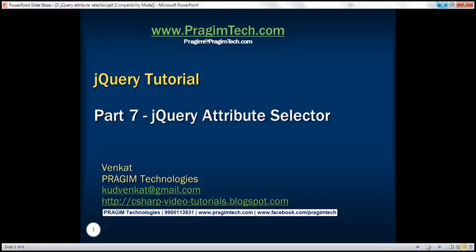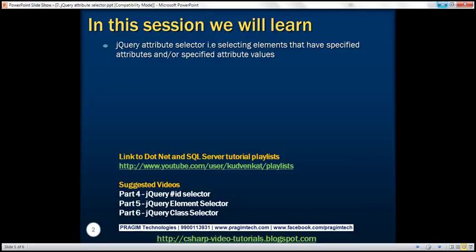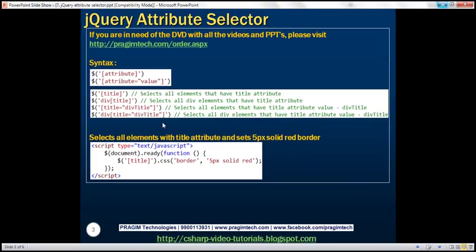This is part 7 of the jQuery tutorial. In this video, we'll discuss the jQuery attribute selector — that is, selecting elements that have specified attributes and/or specified attribute values. Here is the syntax: we specify the name of the attribute within square brackets and pass that to the jQuery dollar function. This is going to find all elements that have the specified attribute.